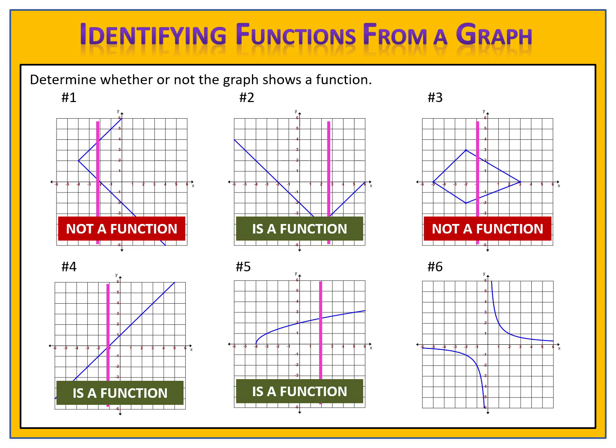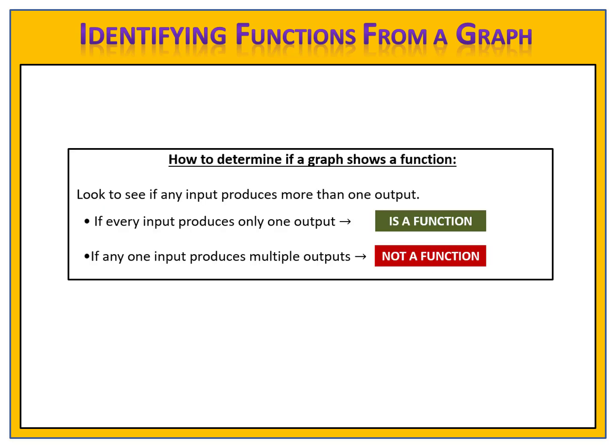How about graph six? Using the vertical line, no matter where we go, we only hit the graph once — so graph six is also a function. And now we know how to determine whether or not a graph shows a function. It's all about looking to see whether any inputs produce more than one output. If each input produces only one output, you have a function; if any input produces more than one output, you do not have a function.